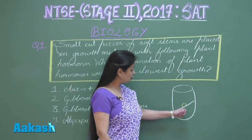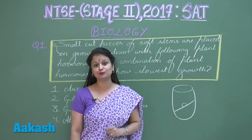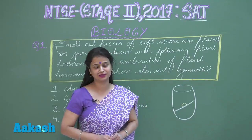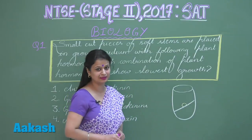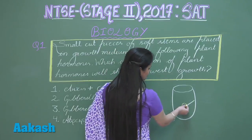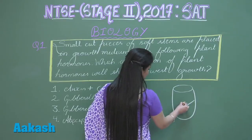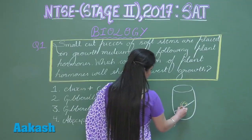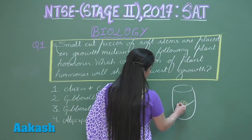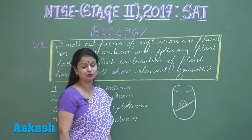To initiate and kick-start cell division, we add growth hormones. The two main growth hormones preferred are auxin and cytokinin. Auxin and cytokinin promote cell division, leading to the formation of an undifferentiated mass of cells.